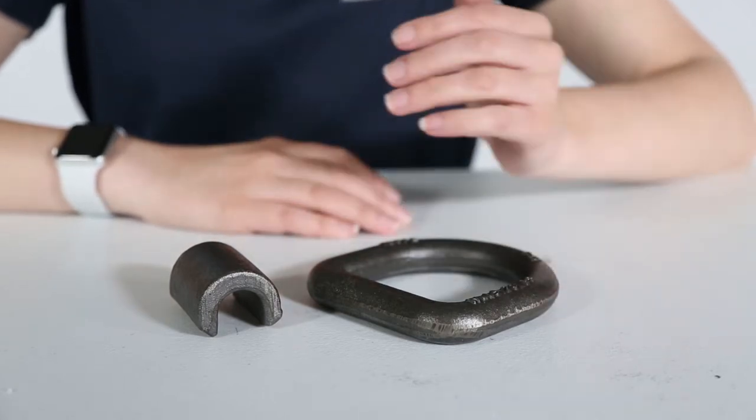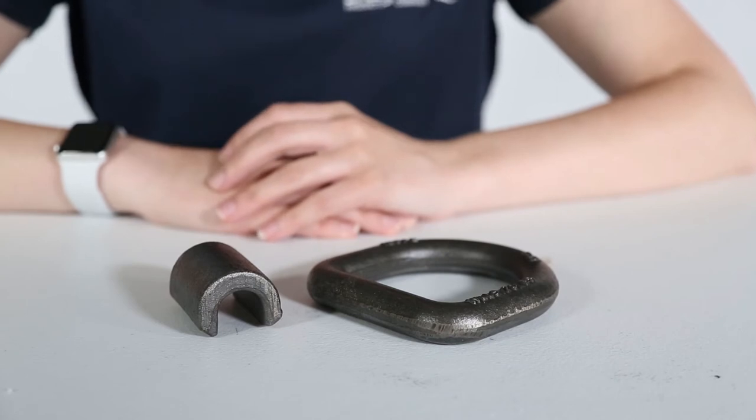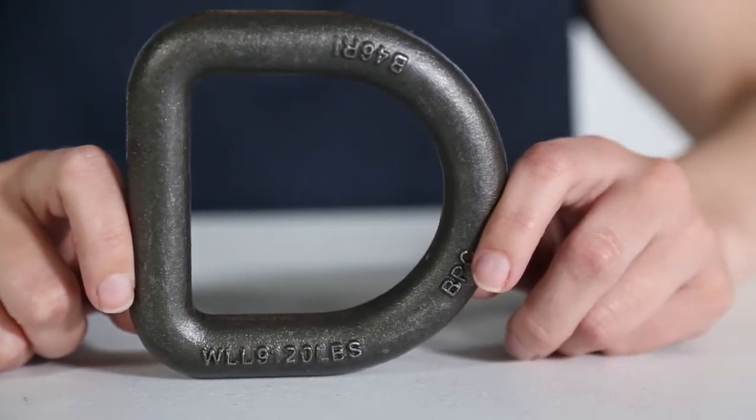The B46 features a safe working load limit of 9,120 pounds. The ultimate brake strength is 26,500 pounds and remember, D-rings are not approved for overhead use.